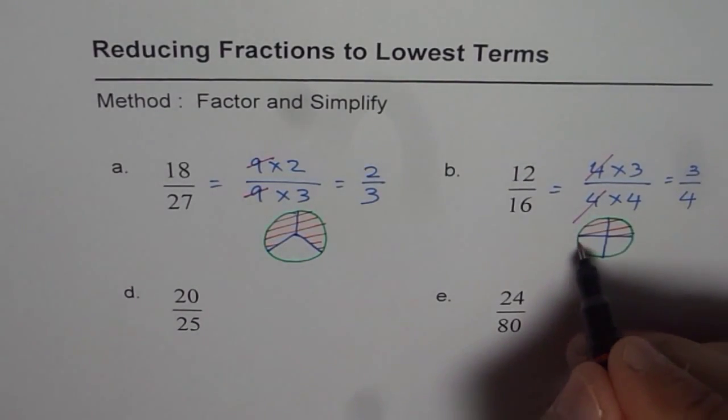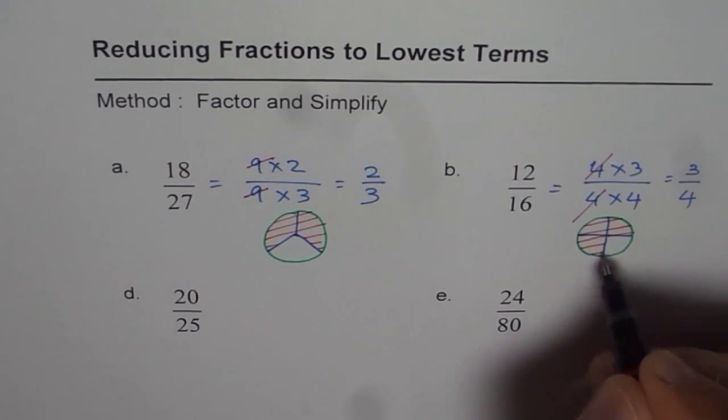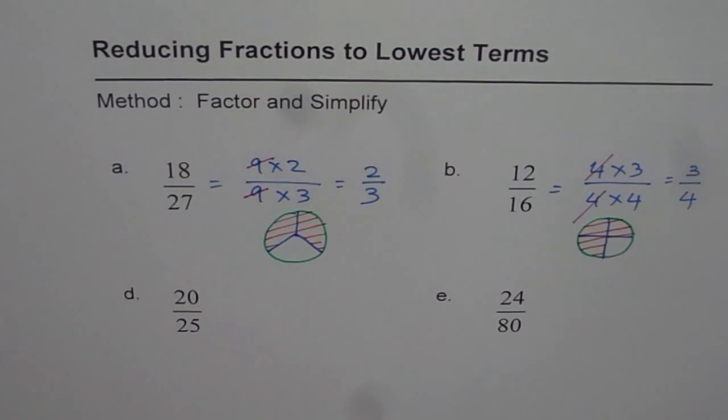We have reduced 12 over 16 to 3 out of 4, and that is what it is. It's kind of an equivalent fraction. I appreciate reducing fractions to lowest terms to understand the fraction better.